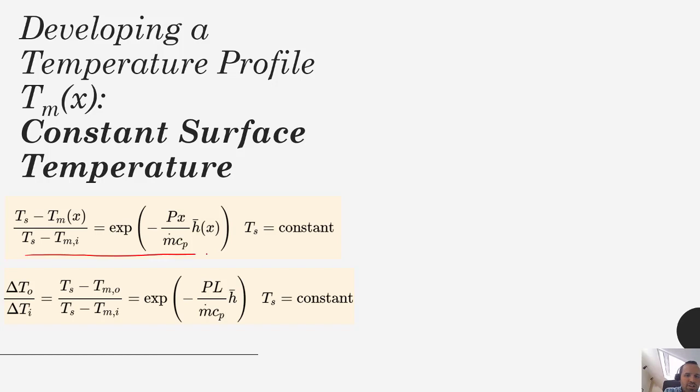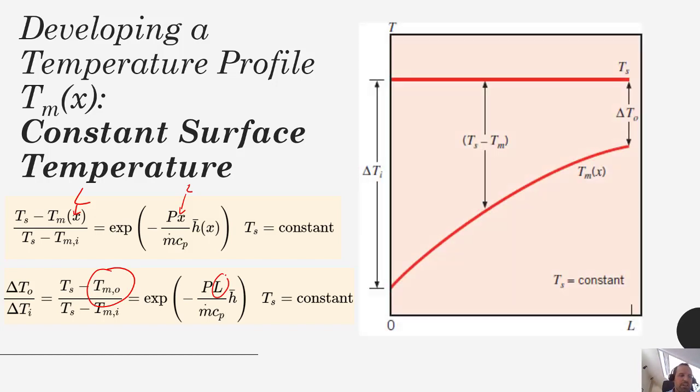So here is that equation again. So whenever we have a constant Ts this is the temperature profile that we would get. If we wanted to figure out what our outlet temperature is, well that's just a matter of substituting in L or the pipe length for x. And typically we'll be dealing with an h bar or a constant value of h there. So making that substitution we end up getting that we can find our outlet temperature just by making that substitution for L. So again here's how that looks.